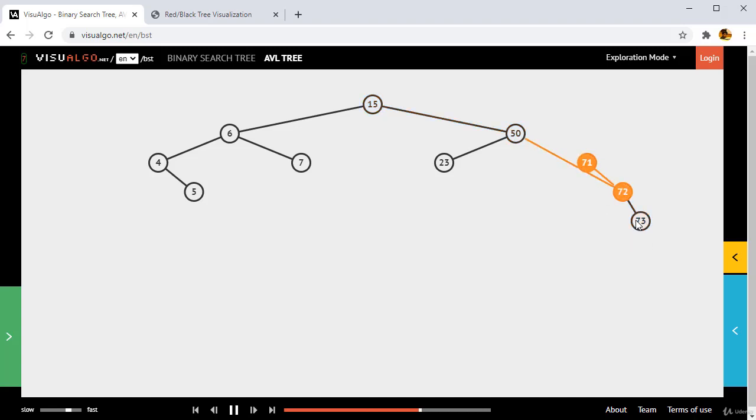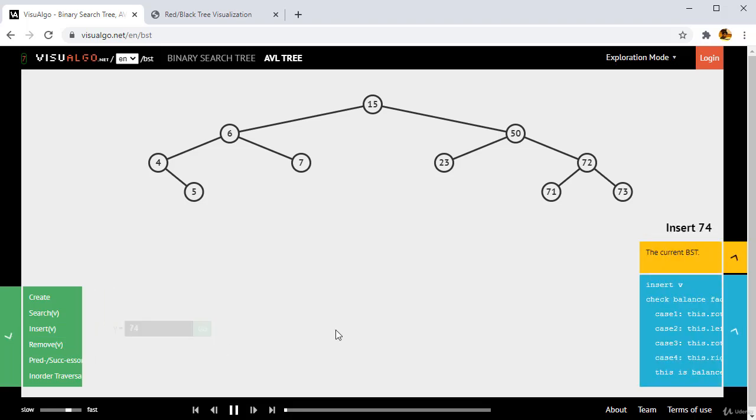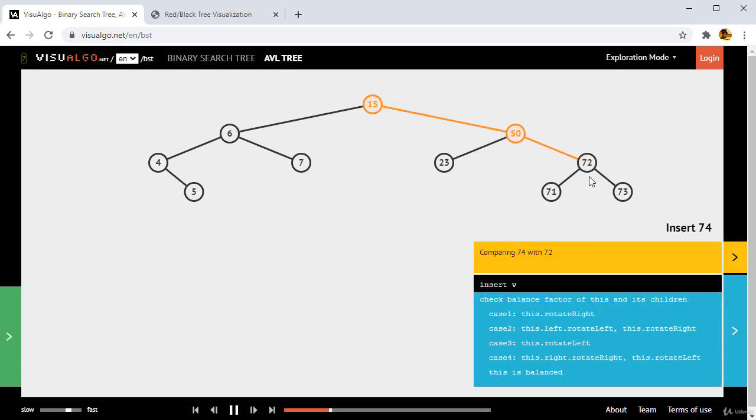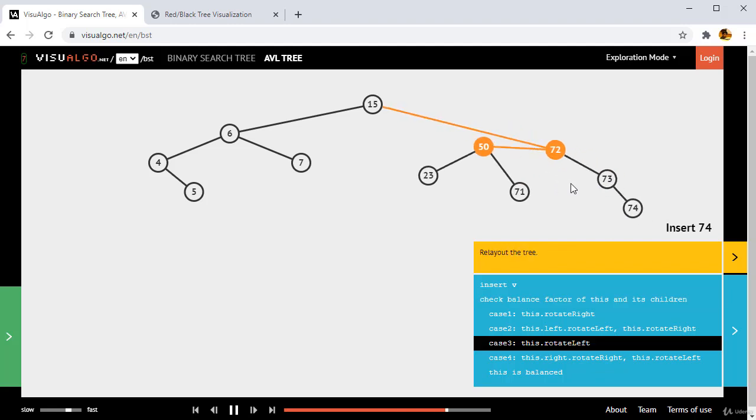So since it is unbalanced, what it is going to do is it is going to update itself. Now how it is going to update: it compares the last three elements, last three elements in a single row. Maybe let me add a new element. Let me insert maybe 74 now. 50, 72, 73, 74 and it is going to rebalance itself. You see.